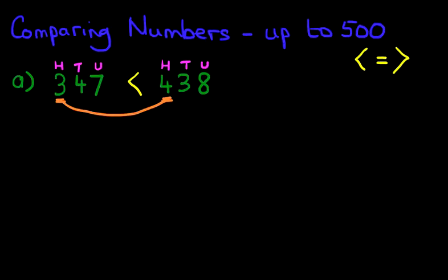And that is the arrow that we use. Notice, we didn't even look at the tens or the units. Because 300 is less than 400, it makes no difference what the units and the tens are. This can now be rewritten as 347 is less than 438.